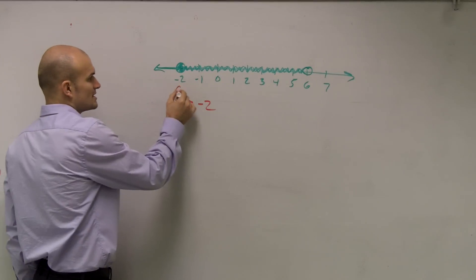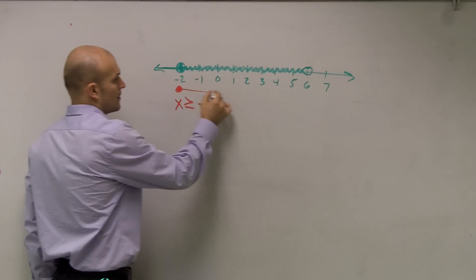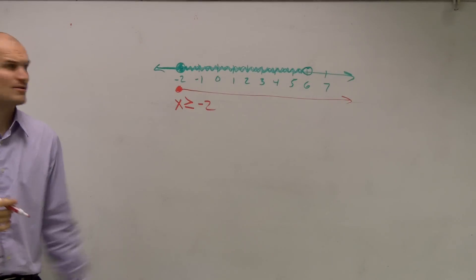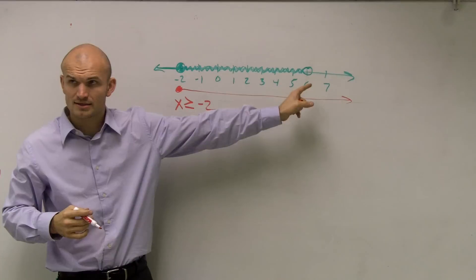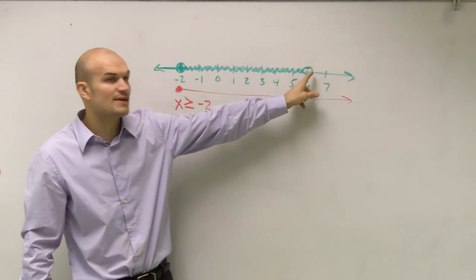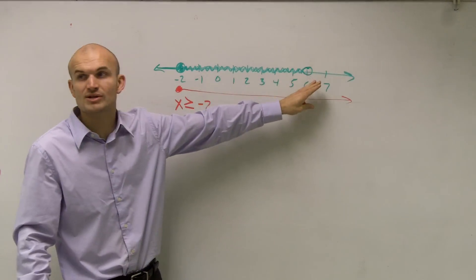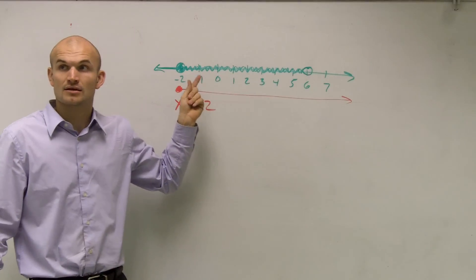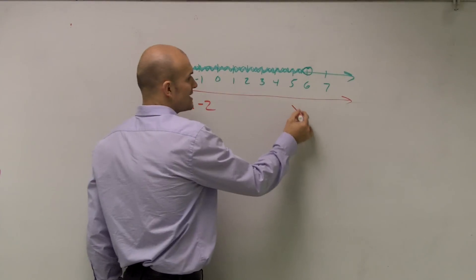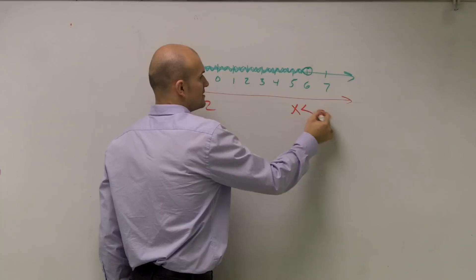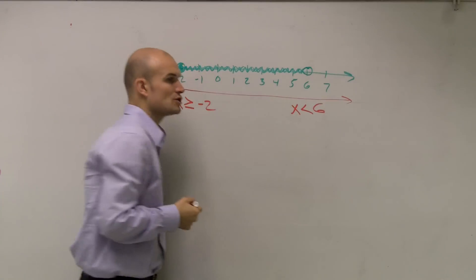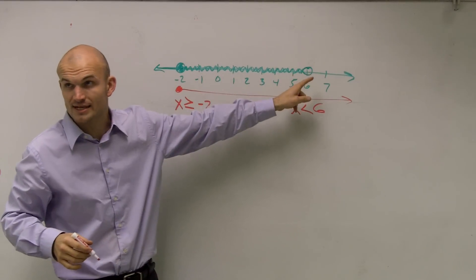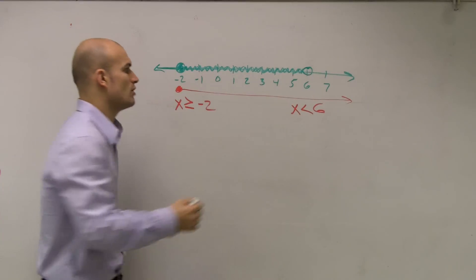That is a little filled circle dot, and that represents all the numbers going to the right. But that's not it, right? Because it stops at 6. At 6, you could say all numbers not including 6 but that are less than 6 work this way. So you could say x is less than 6 — all numbers that are less than 6 but do not include 6 are part of the inequality as well.